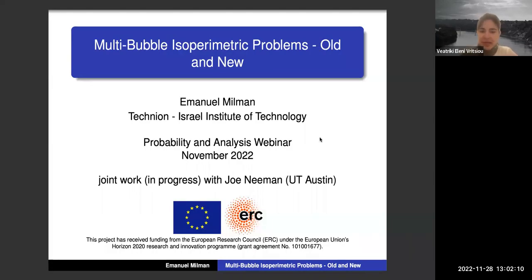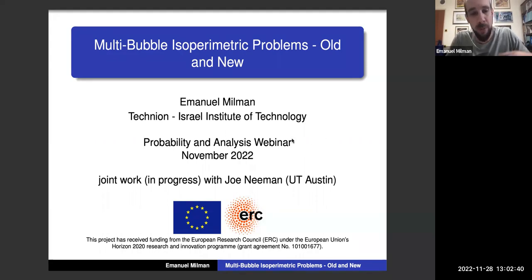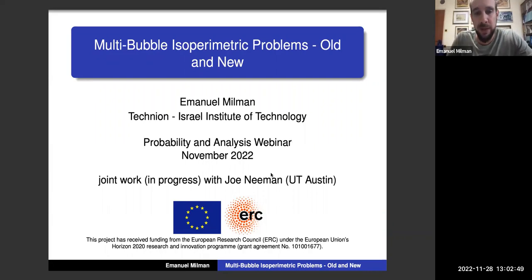Hello everybody. Today we have Emmanuel from the Technion, who will speak to us on multi-bubble isoperimetric problems, old and new. Thank you very much for agreeing to talk. Thank you very much for the invitation. I'm going to speak about this work which is joint — some of it still in progress — together with Joe Neeman from the University of Texas in Austin. It pertains to isoperimetric problems.